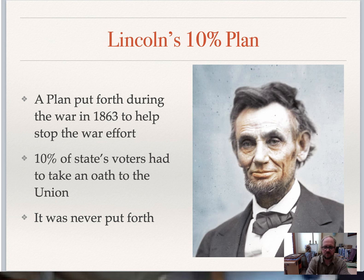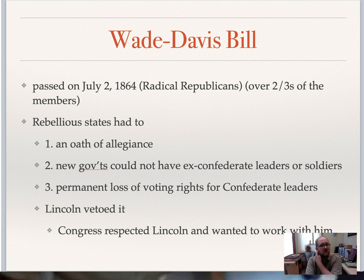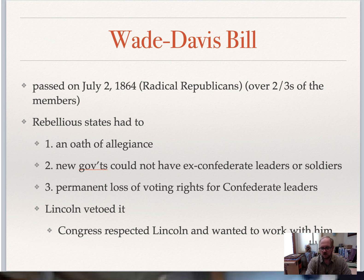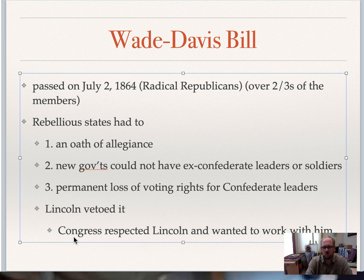Congress's plan was to be a very harsh, punitive plan called the Wade-Davis Bill. It passed on July 2nd, 1864, about a half a year before the war ended, pushed by the radical Republicans. It made every Confederate general or leader punished for life, took away permanent voting rights, barred ex-Confederate leaders from new government, required an oath of allegiance, a new constitution, and ratification of the 13th Amendment. Lincoln vetoed it, and Congress did not override his veto, showing they were willing to work toward a more compromisable Reconstruction plan.